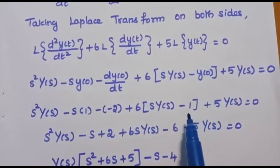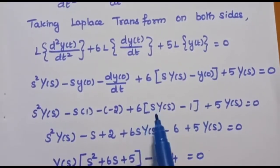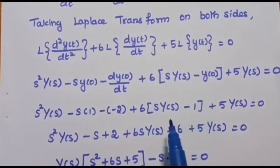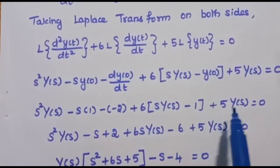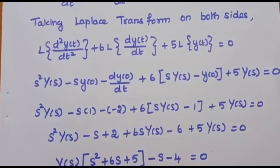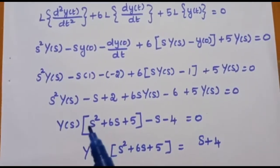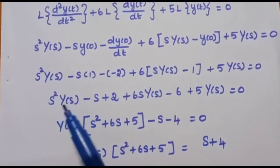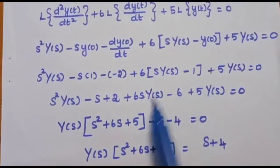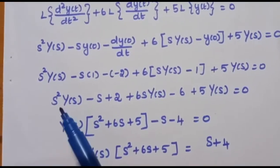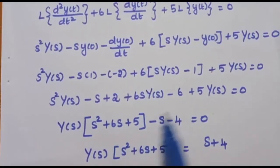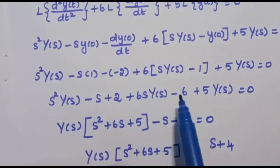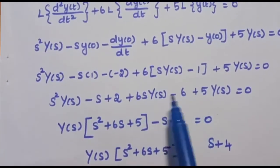Y of 0 becomes 1, so we get plus 6s Y of s minus 6, then multiplying 6 inside the bracket. Plus 5 Y of s is equal to 0. After that we take Y of s as a common term from these three terms: Y of s times the quantity s squared plus 6s plus 5. The remaining terms are minus s, plus 2, minus 6. So minus 6 plus 2 gives minus 4, and that is equal to 0.